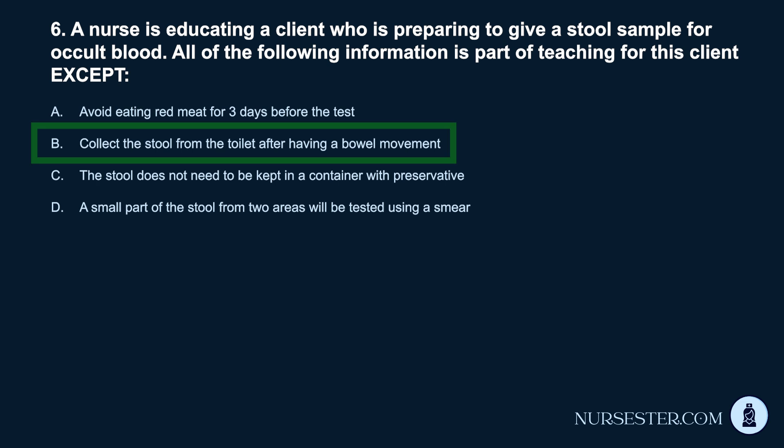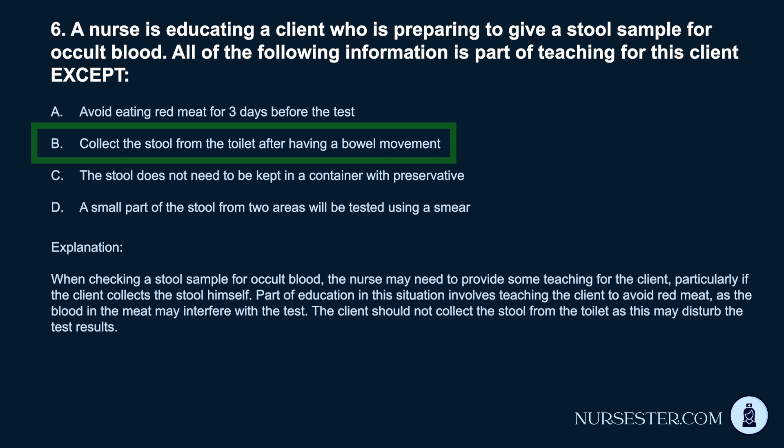Correct answer: B. Collect the stool from the toilet after having a bowel movement. When checking a stool sample for occult blood, the nurse may need to provide teaching for the client, particularly if the client collects the stool himself. Part of education involves teaching the client to avoid red meat, as the blood in the meat may interfere with the test. The client should not collect the stool from the toilet, as this may disturb the test results.